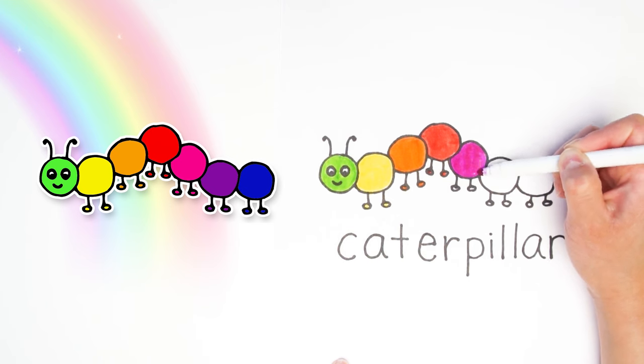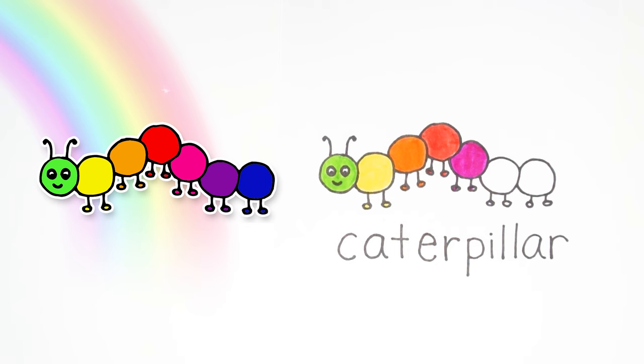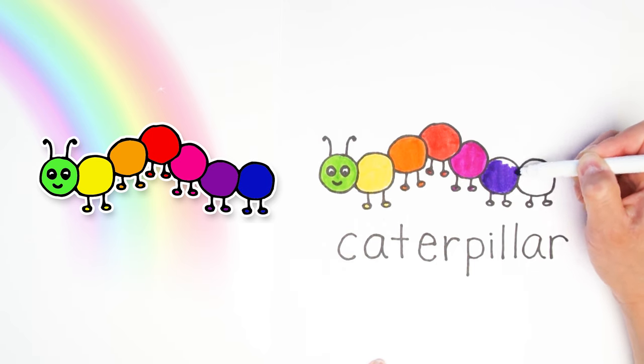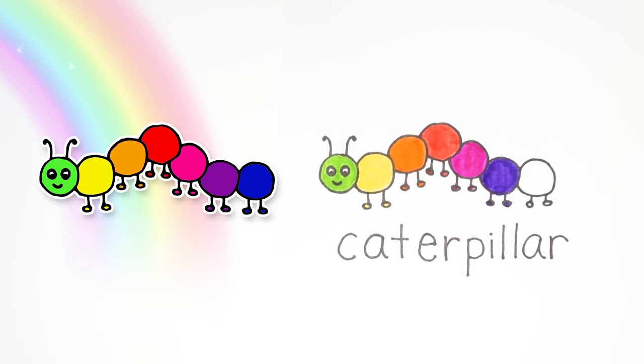I'm going to choose a dark pink right here. And then a purple. Be sure to hold your paper down while you color and that helps you stay in the lines. Okay, the last body part is in blue.